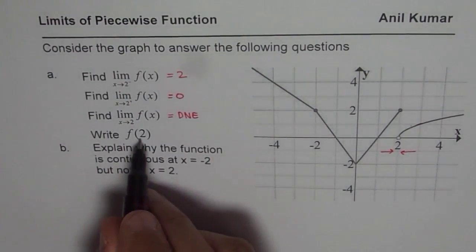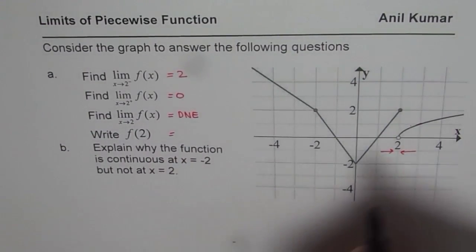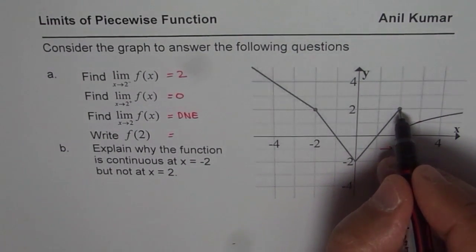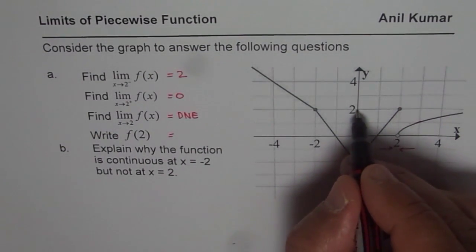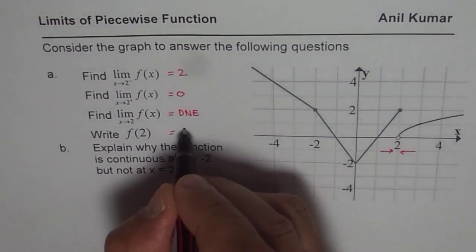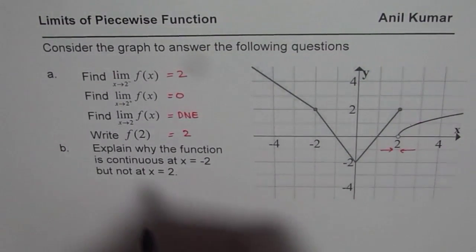Write f of 2 — that means the value of the function at 2. At x equals 2, the filled-in hole is at y equals 2, so f(2) equals 2.